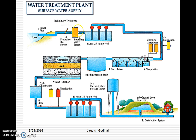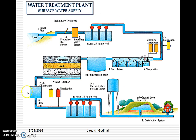If you go to the layout of the treatment plant, the collection works will be the part of the raw water sources — the lake, rivers, ponds, reservoirs. The conveyance works are nothing but the conduits or pipes conveying the water from the source to the treatment facility, also called the treatment works. Then comes the distribution work, which is the network of pipes and conduits in the city or town called the distribution network.